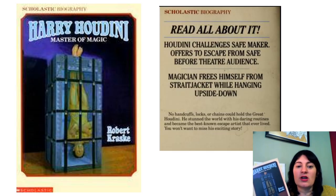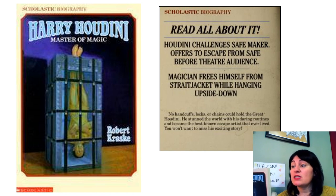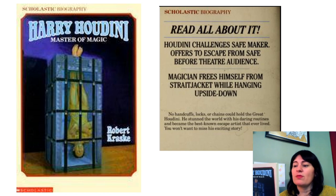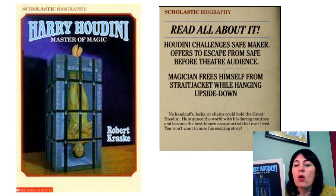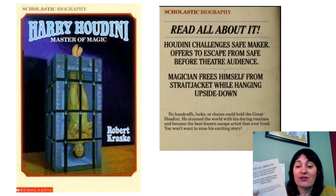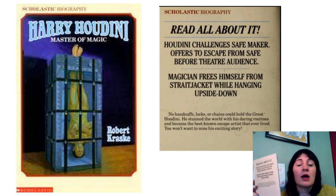Harry Houdini: Master of Magic by Robert Kraske. Read all about it. Houdini challenges safe maker — offers to escape from safe before a theater audience. Magician frees himself from a straitjacket while hanging upside down. No handcuffs, locks, or chains could hold the great Houdini. He stunned the world with his daring routines and became the best known escape artist that ever lived. You won't want to miss this exciting story. That's the back cover of the book we're reading from today. This is an example of a summary, and these two blurbs up here are like headlines that would have been in a newspaper advertising for Houdini's performances.